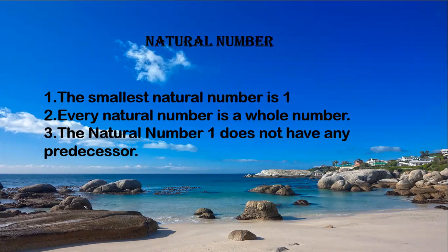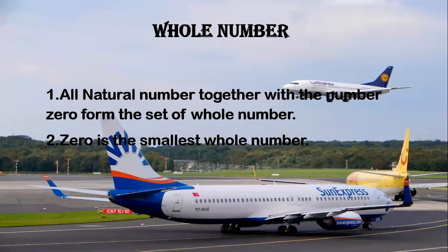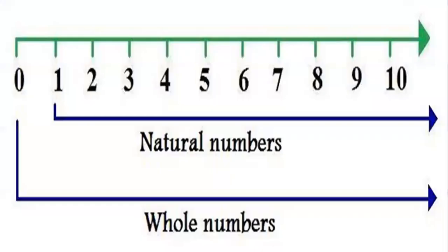The smallest natural number is 1. Every natural number is a whole number. The natural number 1 does not have any predecessor. All natural numbers together with the number 0 form the set of whole numbers. 0 is the smallest whole number. Natural numbers start with 1 and whole numbers start with 0.